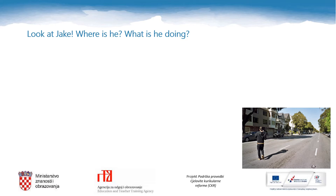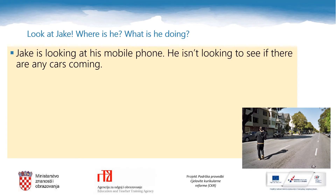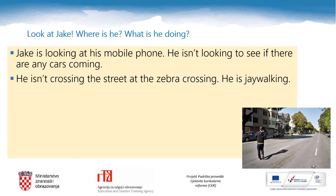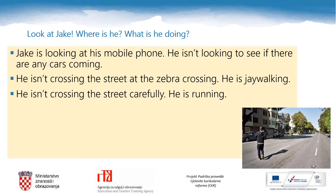Unfortunately, not everyone knows how to stay safe when crossing the street. Look at Jake. Where is he? What is he doing? Jake is looking at his mobile phone. He isn't looking to see if there are any cars coming. He isn't crossing the street at the zebra crossing — he is jaywalking. Jaywalking means when you cross the street where you shouldn't. It's against the law. And finally, Jake isn't crossing the street carefully — he is running. Please don't do these things because this is wrong.